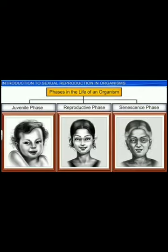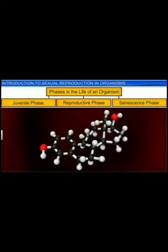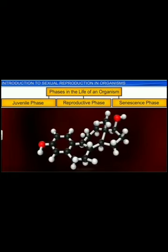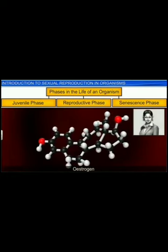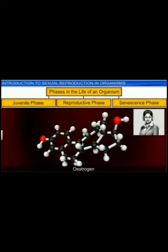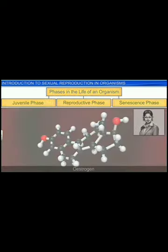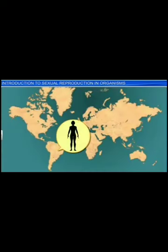Interestingly, the transition between the three stages is controlled by hormones as well as environmental factors. For instance, the release of the hormone estrogen triggers the menstrual cycle in girls. Moreover, girls living in tropical regions experience menstruation at an earlier age than those living in temperate regions.